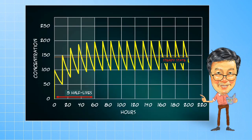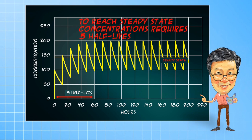In a multi-dose regimen, the accumulation occurs in a mirror image fashion to elimination. We conveniently say that steady-state drug concentrations are achieved after 5 half-lives. This is a mathematical reality and is independent of how long the half-lives, dose, and dosing intervals actually are. Steady-state concentrations are achieved at 5 half-lives.